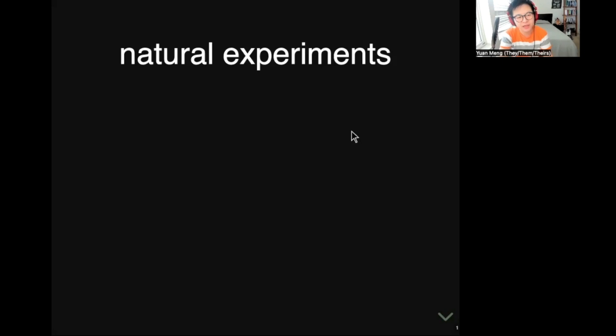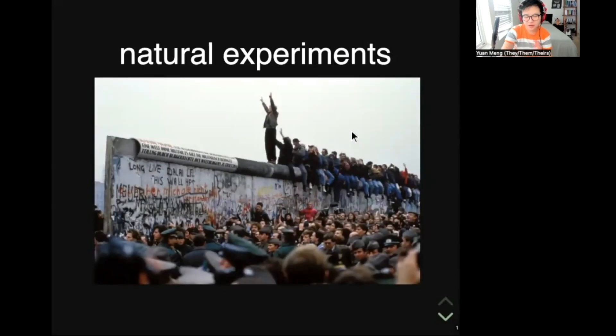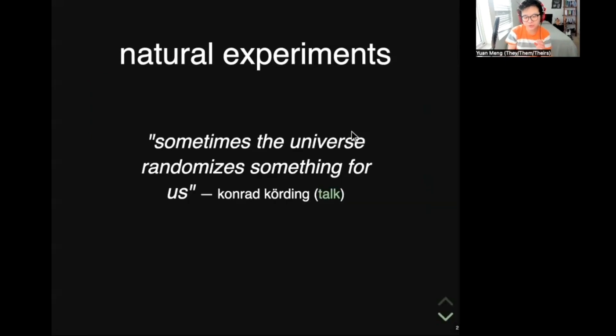Okay, so today we're going to talk about another method for causal inference: natural experiments. In everyday language, natural experiments often refer to things that only happen once in a lifetime, like the fall of the Berlin Wall. But for causal inference, what makes them useful is not how rarely they happen, but when natural experiments happen, the universe randomizes something for us. There are many ways natural experiments can happen. Today we're going to focus on one such example: regression discontinuity.